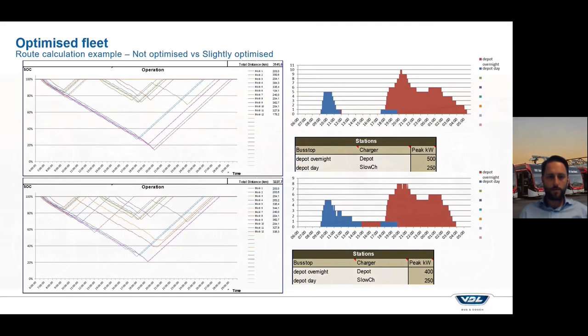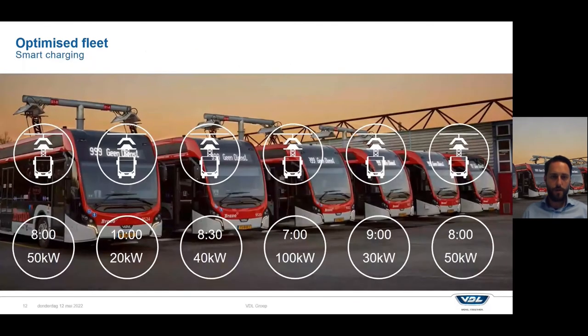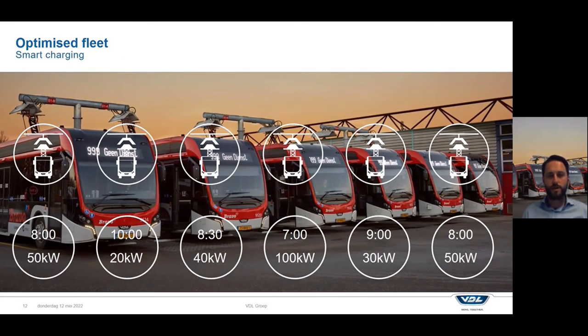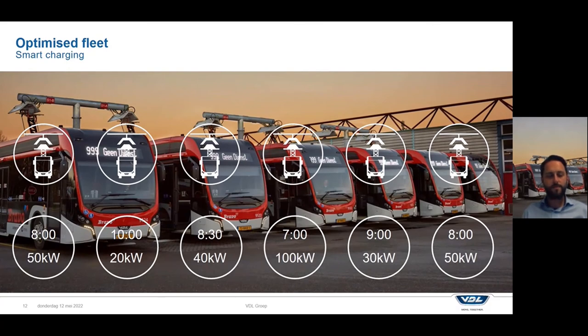To do that, there is also something called smart charging. Smart charging means a lot of different things. But in general, it's thinking on when to charge, how to charge, how long, and with what kind of charging power. Quite often, there is a software that can control the buses or the chargers to delay the start of the charging session, or to have a different charging power for each bus.